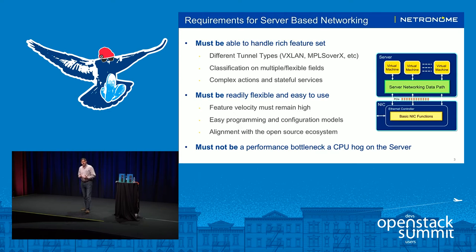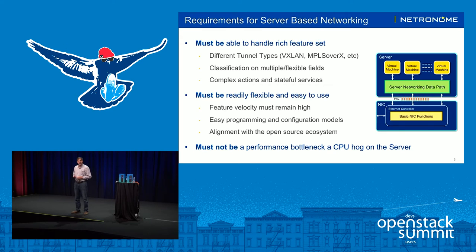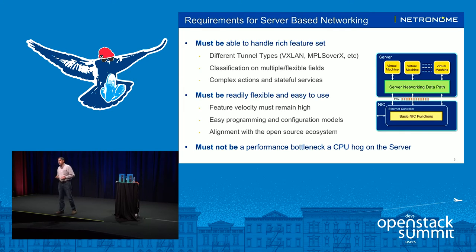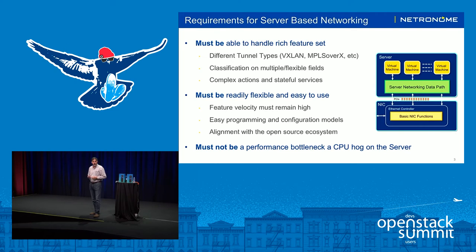The key attributes of the server-based networking data path in an OpenStack environment are the ability to handle these rich features and future features that may come along. It's very important that the server-based networking data path is very flexible and easy to use, so that operators can roll out features very quickly, implement new tunnel types and new features in their OpenStack clouds. That implies very simple and easy programming and configuration, and leverage of the open-source ecosystem is critical as well. What the server-based networking data path must not be is a bottleneck to performance or provide an excessive tax on the server CPU.